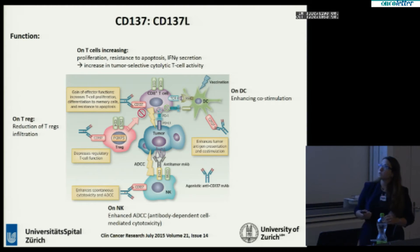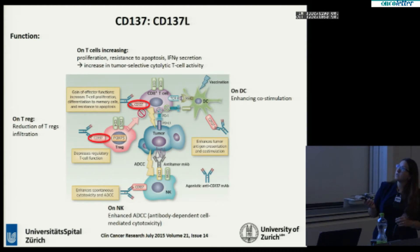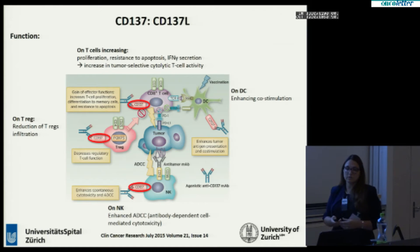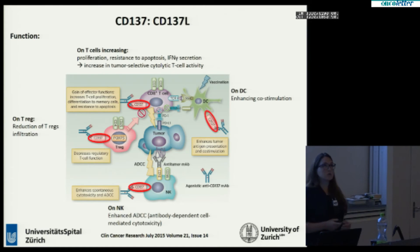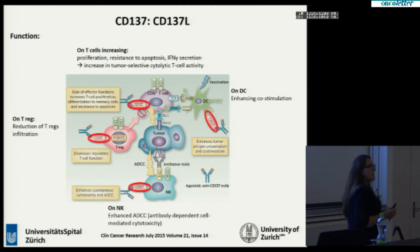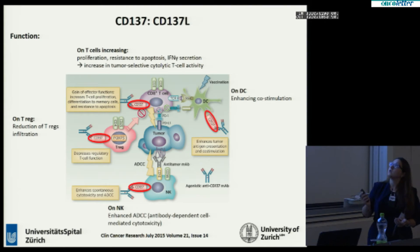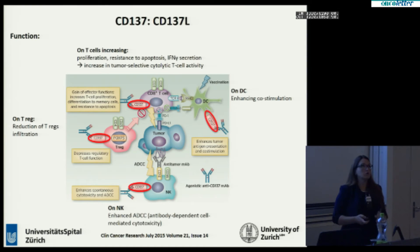If we know that CD137 is important on T regulatory cells by reducing their infiltration, but also on NK cells by helping their function, as well as on T cells by increasing their proliferation and presence, as well as on dendritic cells, we would think we could understand how toxic this treatment could have been. Ongoing clinical trials are using CD137 in combination with other treatments but with much lower dosage.